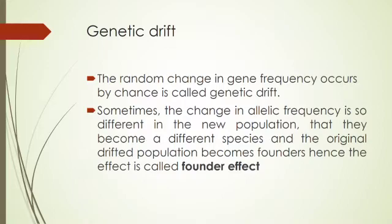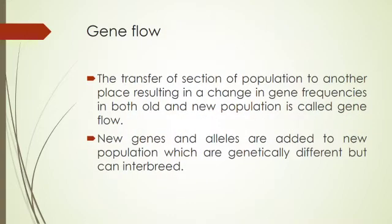To summarize: genetic drift is the random change in gene frequency that occurs by chance. Sometimes the change in allelic frequency is so different in the new population that it leads to the formation of a different species.